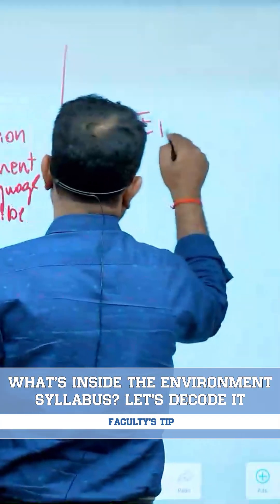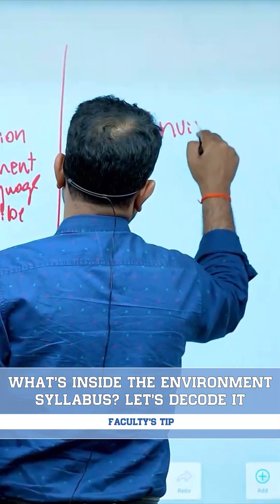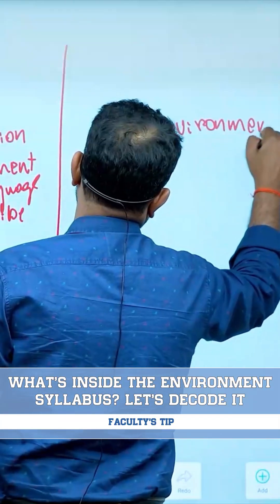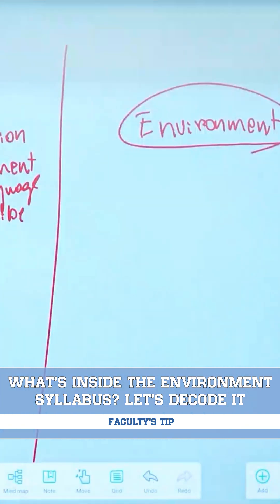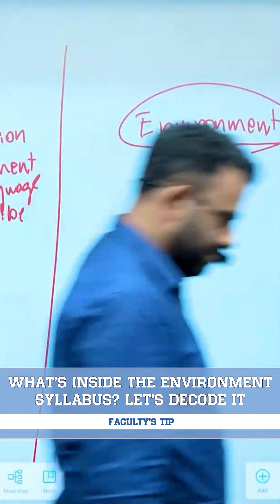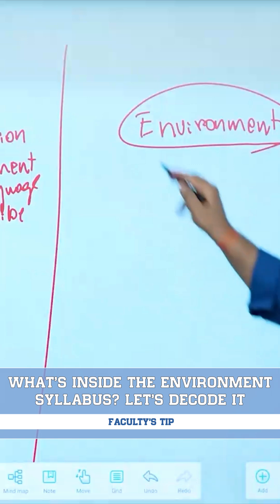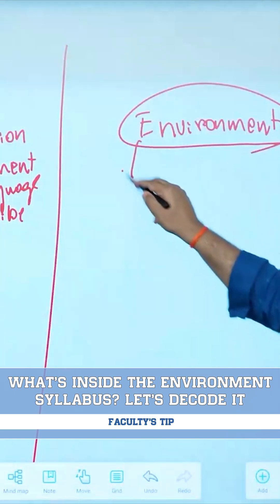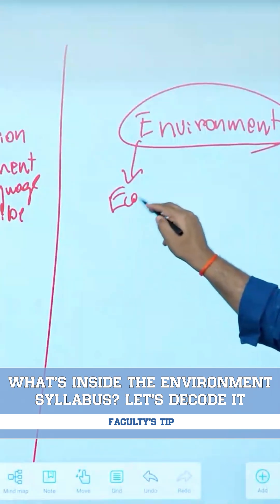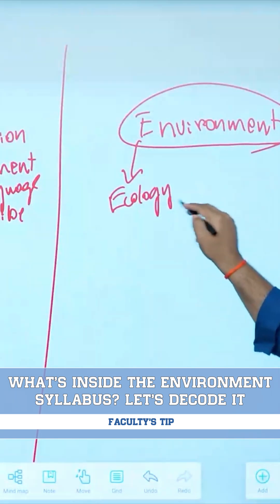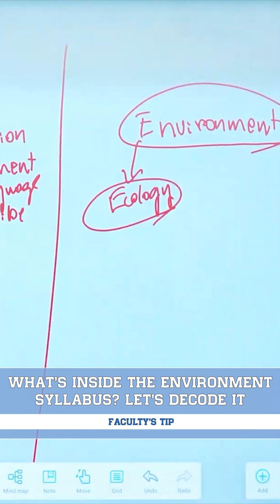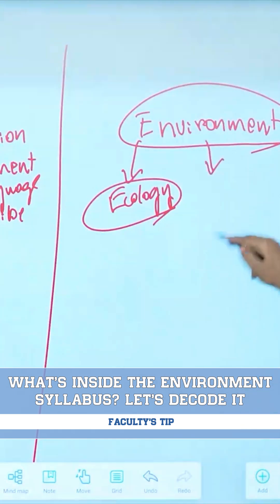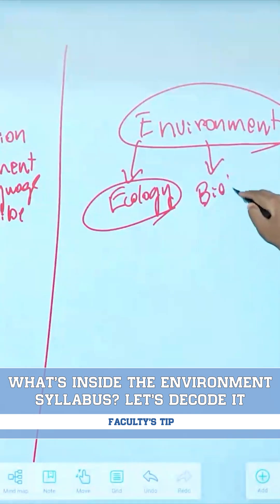On the other hand, there is environment. The study of environment covers starting from the study of ecosystem, which we call ecology, the study of ecology, and then the study of life on the earth — the study of biodiversity.